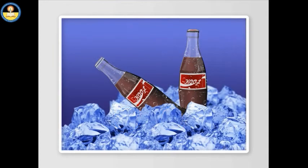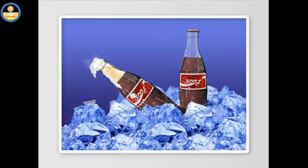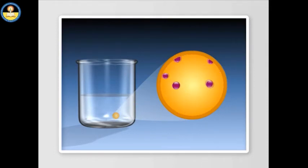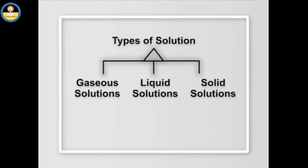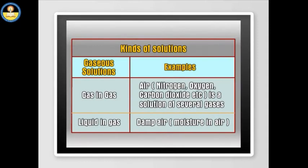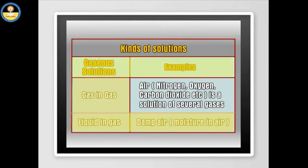We can also have an example of a solution of a gas in a liquid. Soda water is a solution of carbon dioxide in water, with uniform composition throughout, as carbon dioxide is uniformly distributed in water. Examples of gaseous solutions include air, which is a solution of several gases — nitrogen, oxygen, carbon dioxide, etc.